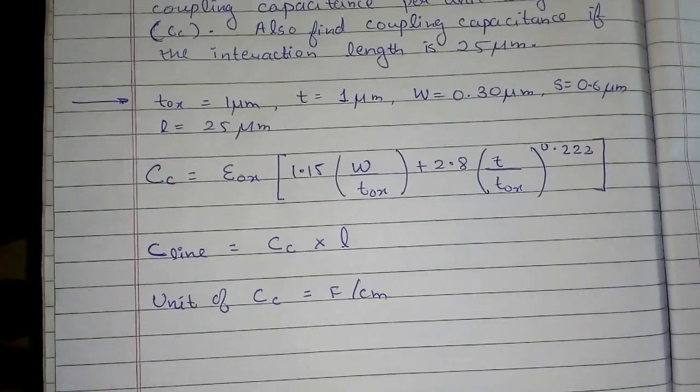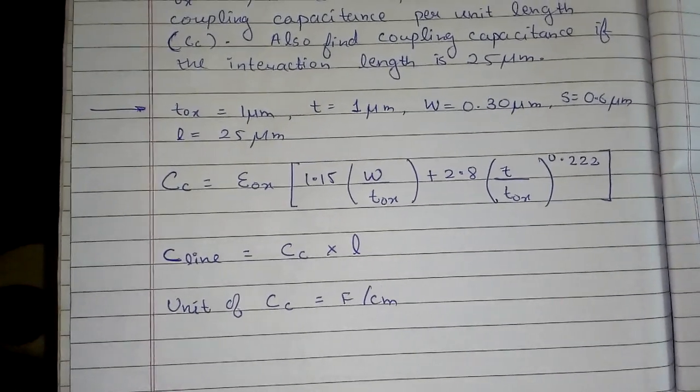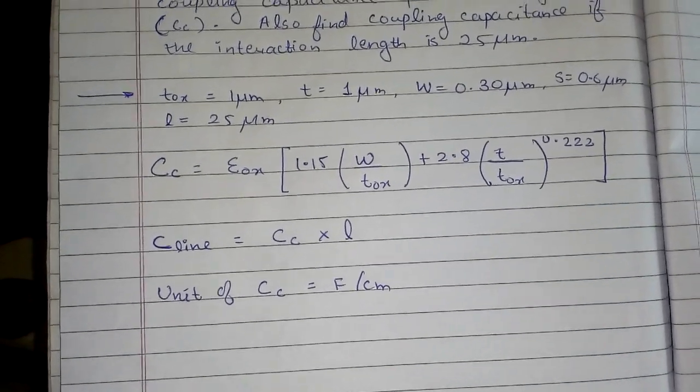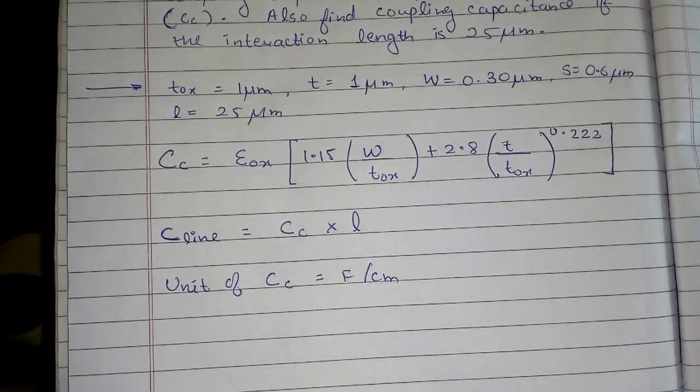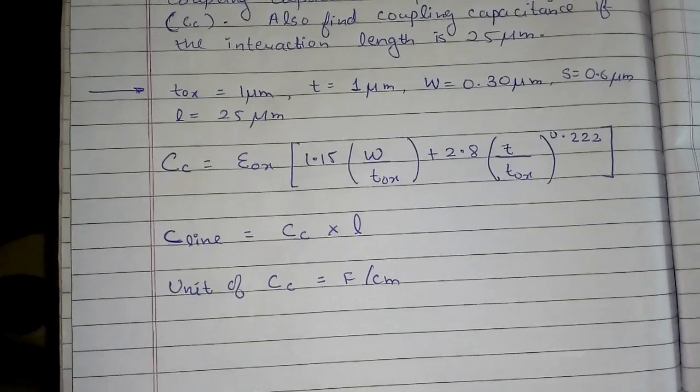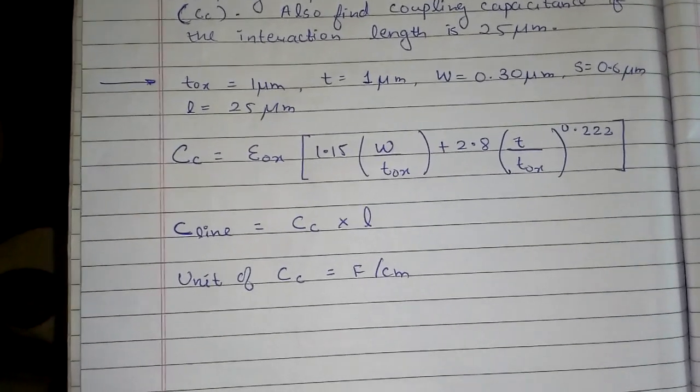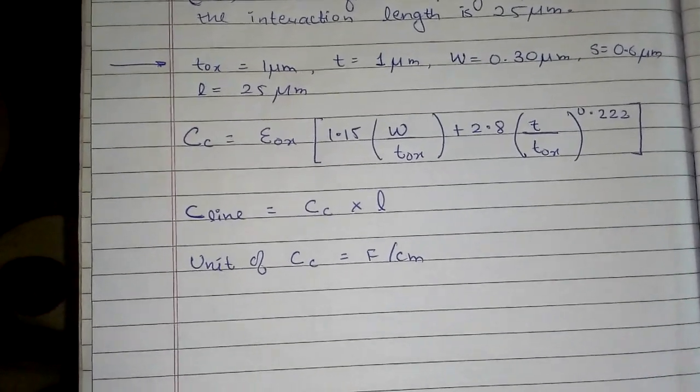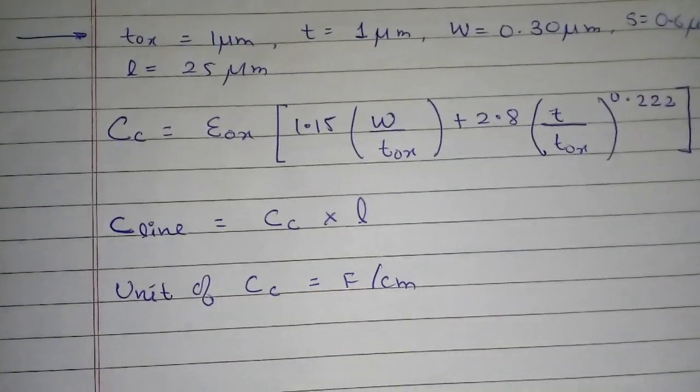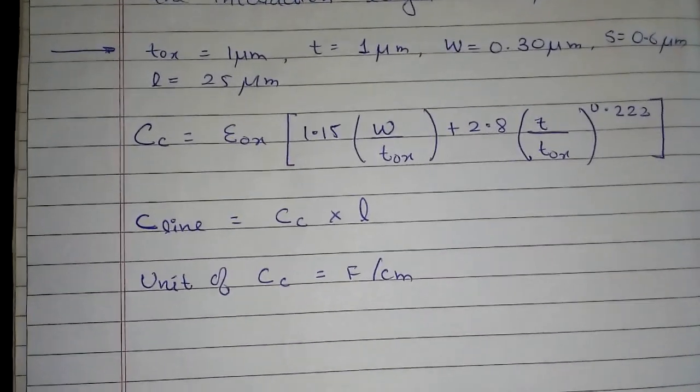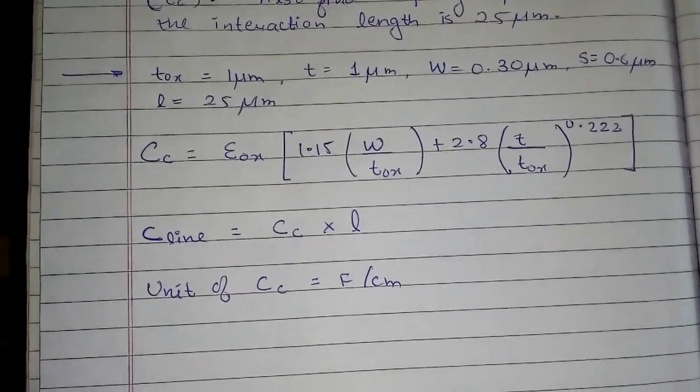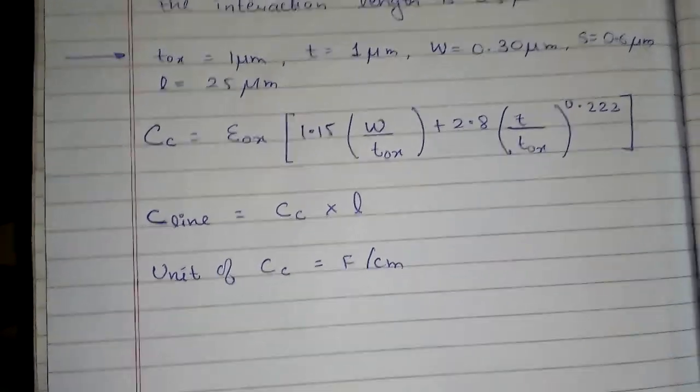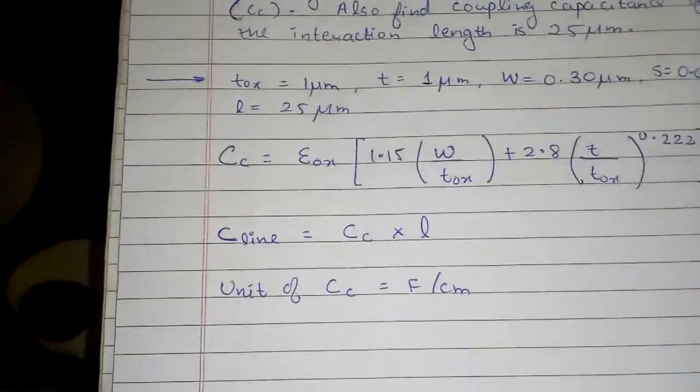Now I am given tox, I am given t, I am given w, I am given s, I am given l. Now the coupling capacitance formula is εox multiplied by [1.15 × (w/tox) + 2.8 × (t/tox)^0.222].